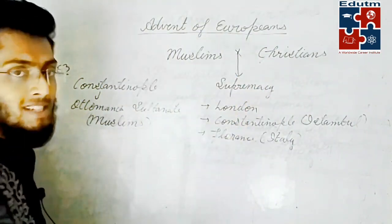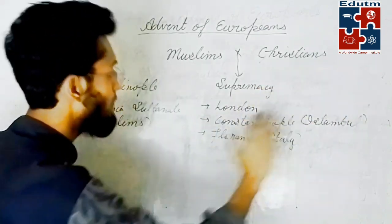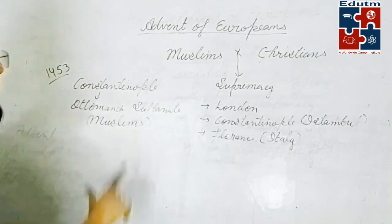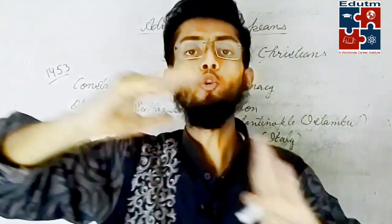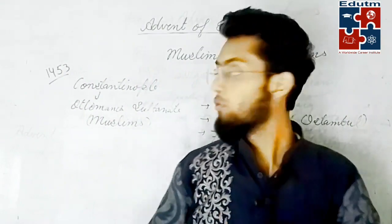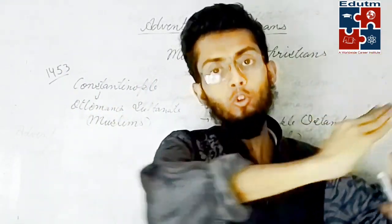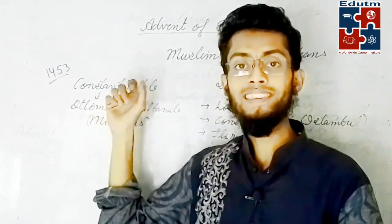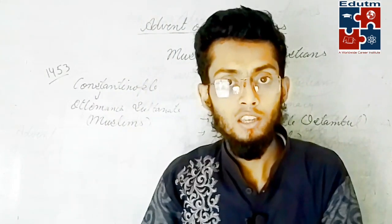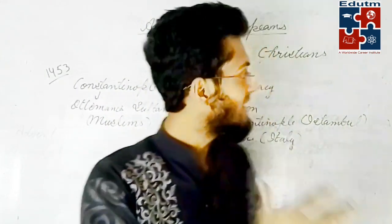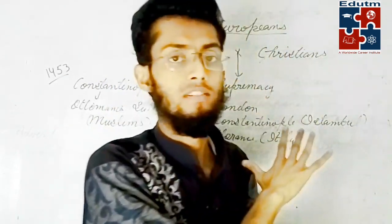At that time, Constantinople was the only single route to travel from Europe to India. When the Usmani Sultanate captured Constantinople, they blocked the path of the Byzantines and Christians. The Byzantines were also an empire of Christians.